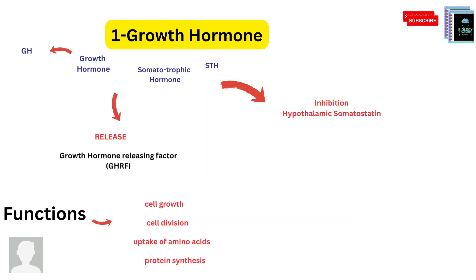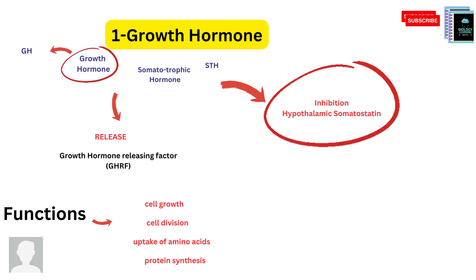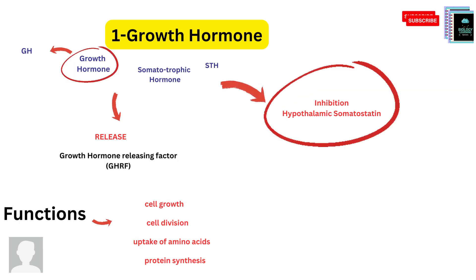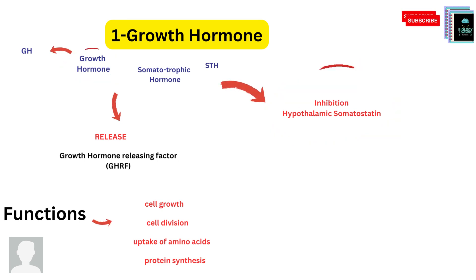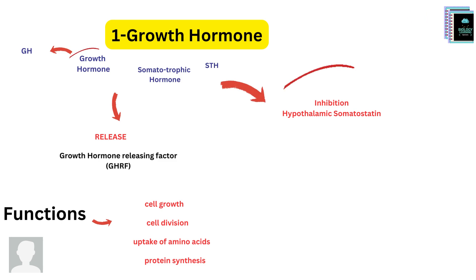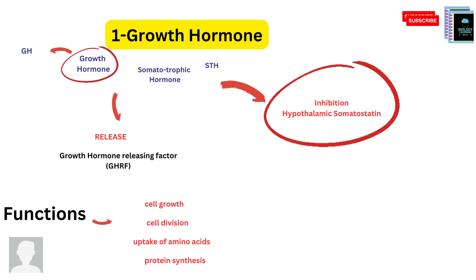The first hormone is the growth hormone, also called the somatotrophic hormone. Under hypothalamic influence, the growth hormone releasing factor causes it to be released. For inhibition, the hypothalamic somatostatin acts as the inhibiting factor that inhibits growth hormone production. The release or inhibition depends on different physiological situations.